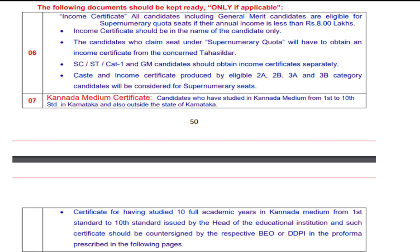The next conditional document is the Kannada medium certificate. This is for students who studied from 1st to 10th in Kannada medium within Karnataka. If you studied in Karnataka from 1st to 10th in Kannada medium, you need to obtain a Kannada medium certificate. The format for this certificate was shared in a previous video — the link is in the description. The certificate for having studied 10 full academic years in Kannada medium for 1st to 10th standard is issued by the head of the educational institution and must be countersigned by the respective BEO or DDPI.